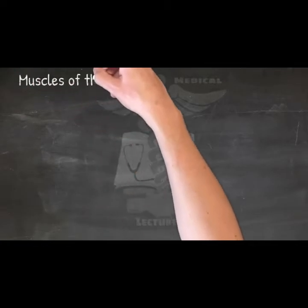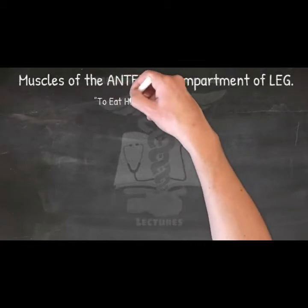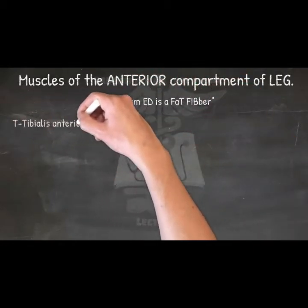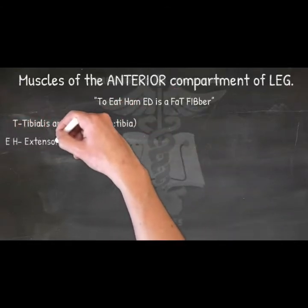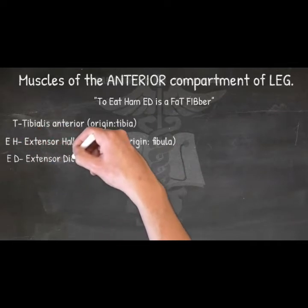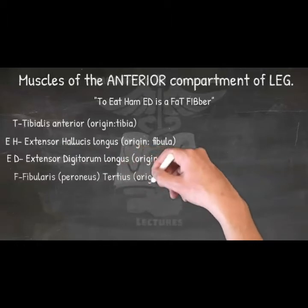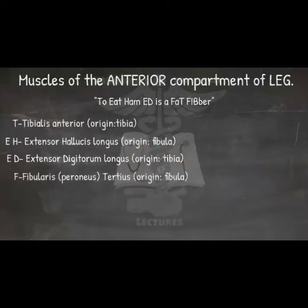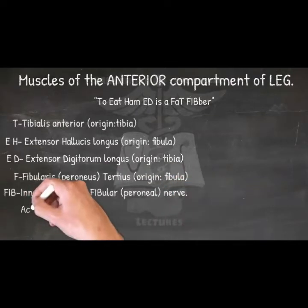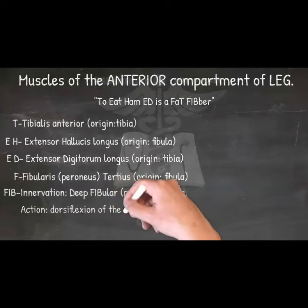Muscles of the anterior compartment of the leg — mnemonic: 'To Eat Ham, Ed Is A Fat Fiber.' Tibialis anterior (tibia as origin), Extensor hallucis longus (fibula as origin), Extensor digitorum longus (tibia as origin), Fibularis tertius (fibula as origin). Innervation: deep fibular nerve. Action: mainly dorsiflexion of the foot.